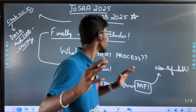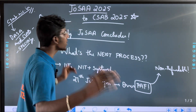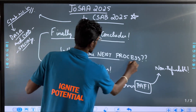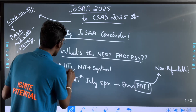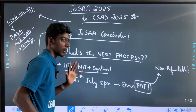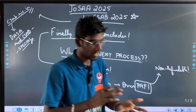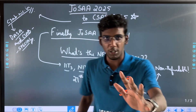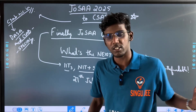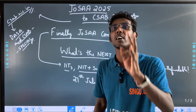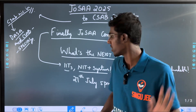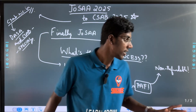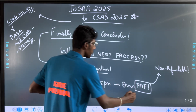What is the next process? For IITs, the NIT system follows. IITs physical reporting has started. If you go to IIT's seat, you will do the next process. For the NIT system, on 27 July evening at 5 PM, PAF is the next step.